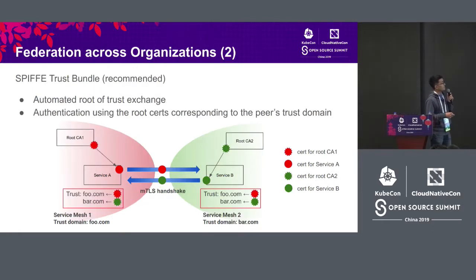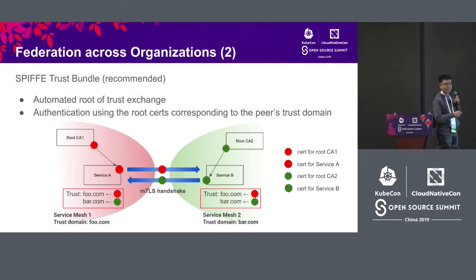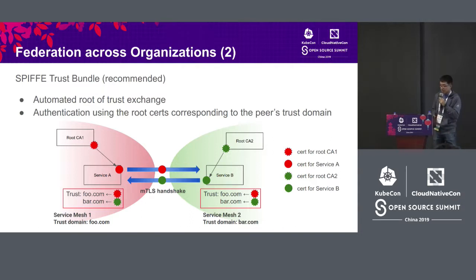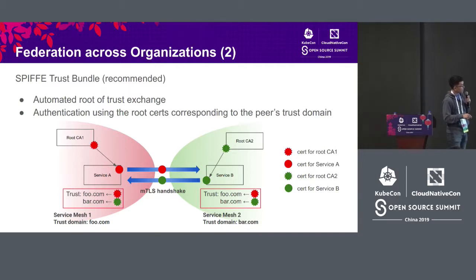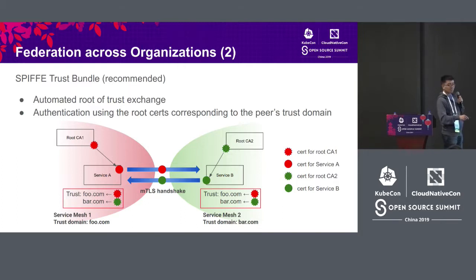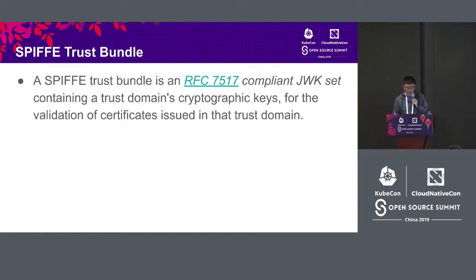What we recommend instead is the SPIFFE Trust Bundle. The core advantages are: first, automation of the root-of-trust exchange; and second, authentication can use the root certificate corresponding to the peer's trust domain. In this graph, root CA-1 signs certificates for service A and root CA-2 signs for service B — but beyond that, there is a trust bundle mapping: for foo.com, only use root CA-1's certificate to verify; for bar.com, only use root CA-2's certificate. I will talk about how this entire thing works in the following slides.